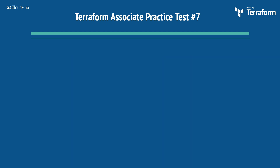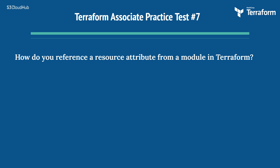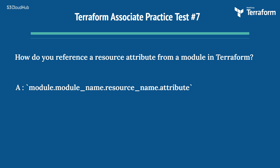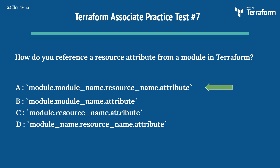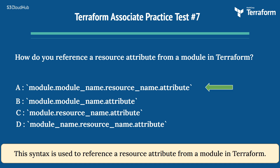The seventh question: how do you reference a resource attribute from a module in Terraform? Options are: A) module.module_name.resource_name.attribute, B) module.module_name.attribute, C) module.resource_name.attribute, D) module_name.resource_name.attribute. The right answer is Option A, module.module_name.resource_name.attribute. This syntax is used to reference a resource attribute from a module in Terraform.